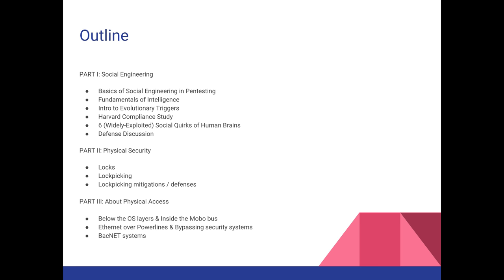Part three covers physical access and what a sophisticated attacker can do with it. We'll put some numbers behind commodity tools — it may surprise you how cheap someone can pull off some really interesting effects. We'll cover what happens below the operating system level and inside the motherboard bus, Ethernet over power lines, bypassing physical security systems, and building automation control systems using BACnet and recent security research in that field.